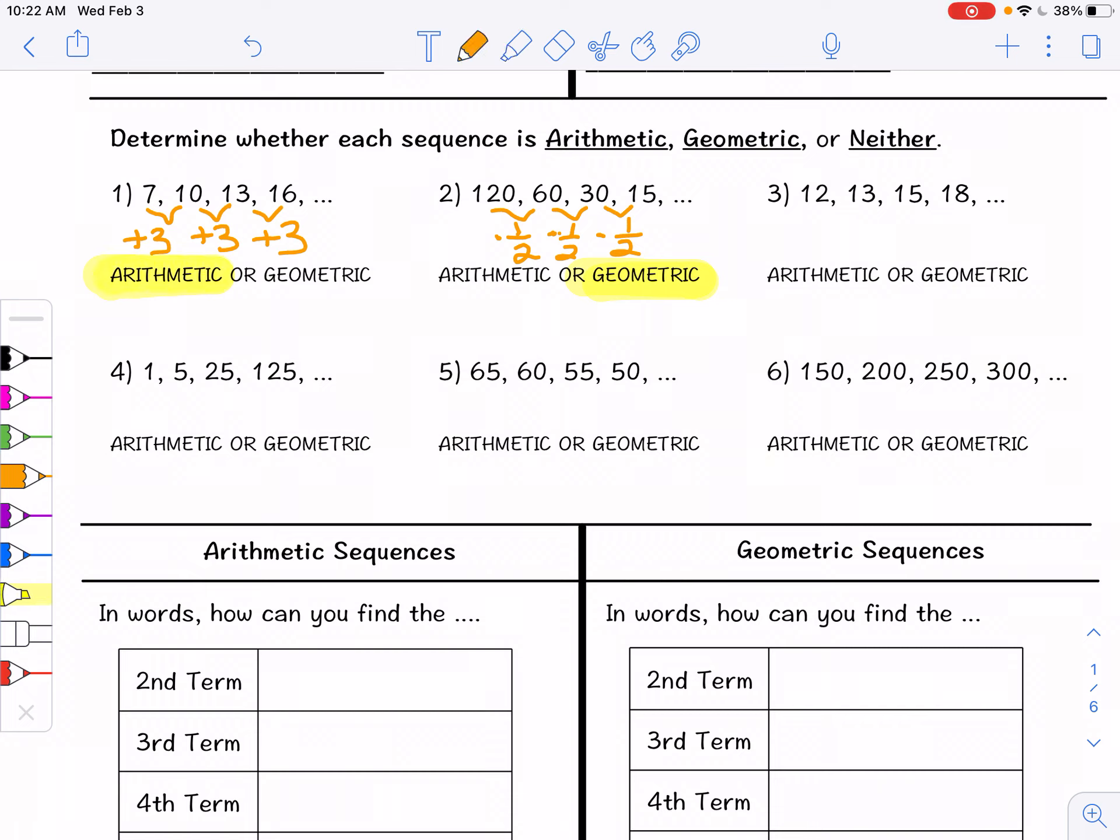12, 13, 15, 18. We're adding 1, adding 2, and adding 3. Although there is a pattern, 1, 2, 3, and the next one you'll add 4, add 5, it is an addition pattern but it's not the same number over and over again. So because it's not the same number over and over again, this one is neither. There is no common difference or common ratio.